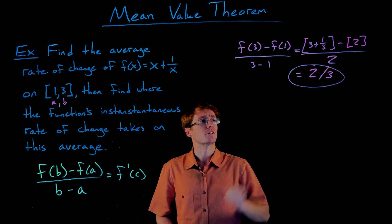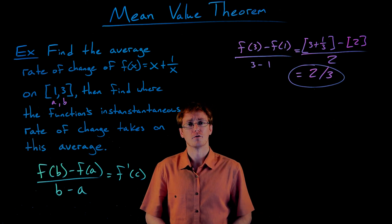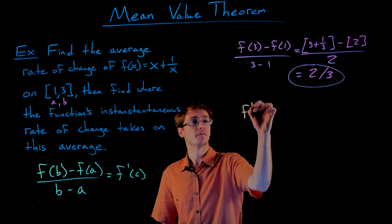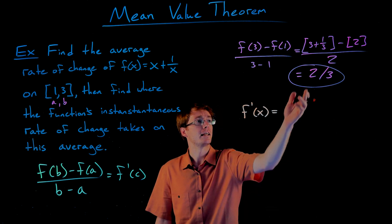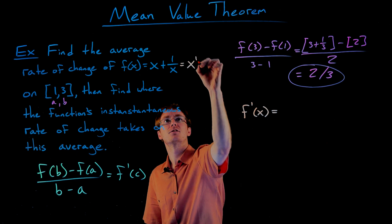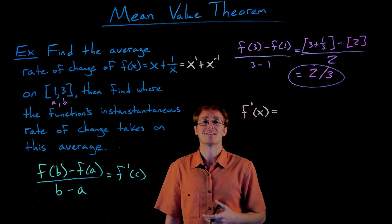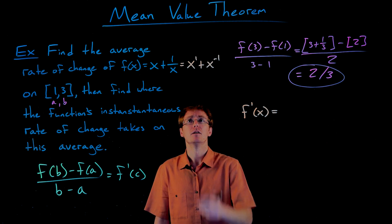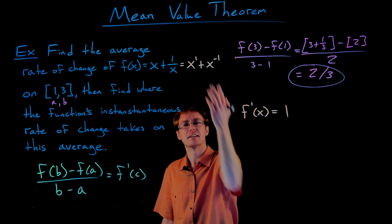Now we have to figure out where this function's instantaneous rate of change takes on the value of 2/3 within our interval from 1 to 3. The instantaneous rate of change is given by the derivative of our function, so we need to find f'(x) first. Our function f is x + 1/x, which we can rewrite as x¹ + x⁻¹ to help us differentiate it using the power rule.